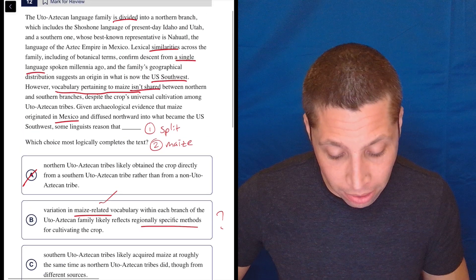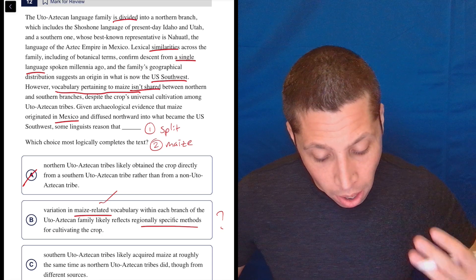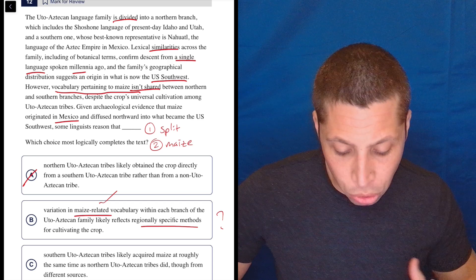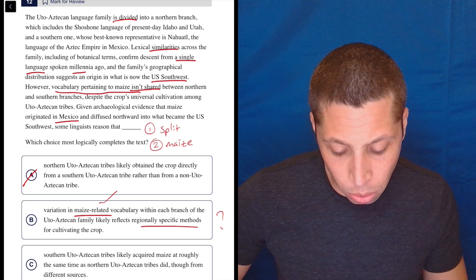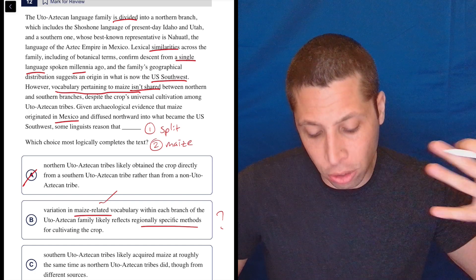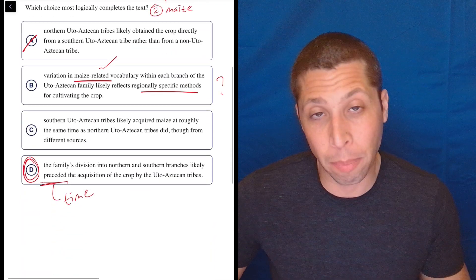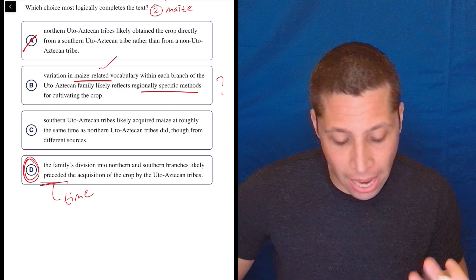This is one of those things that normally when they bring time into an answer choice, it makes me skeptical. That's a very common trap answer reason for these questions. But here, we're talking about time, right? This is about things dividing and then later on, there's millennia involved. There's a distribution. Things are changing over time. They have different words. So, I don't know. The idea of things changing over time is a big theme of this passage. So, it doesn't bother me that my choice is about that. If anything, it makes me feel more comfortable with it. But this is exactly what I predicted.